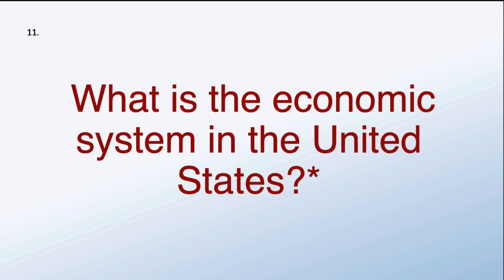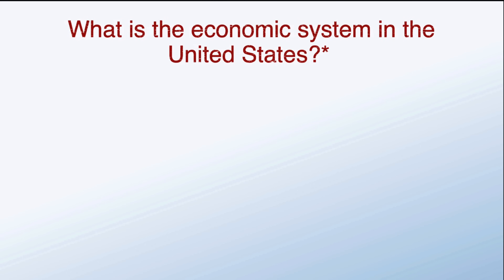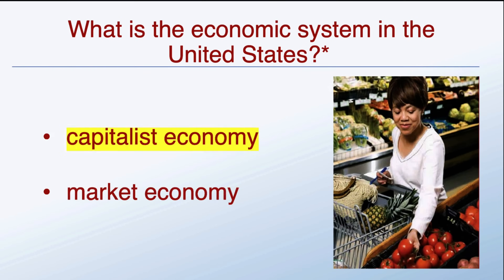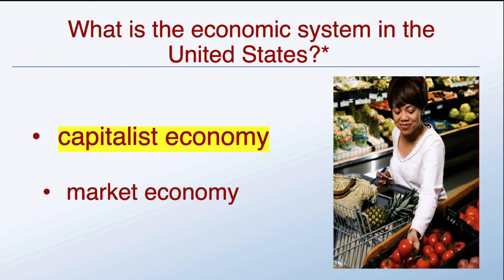What is the economic system in the United States? It's a capitalist economy. The other answer here is market economy — if that's easier to say, that's fine. Either answer is correct: capitalist or market economy.